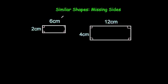In this video we're going to look at similar shapes and how to find missing sides of similar shapes. So here we've got two rectangles. This rectangle has got a length of 6cm and a width of 2cm, and this rectangle has got a length of 12cm and a width of 4cm.